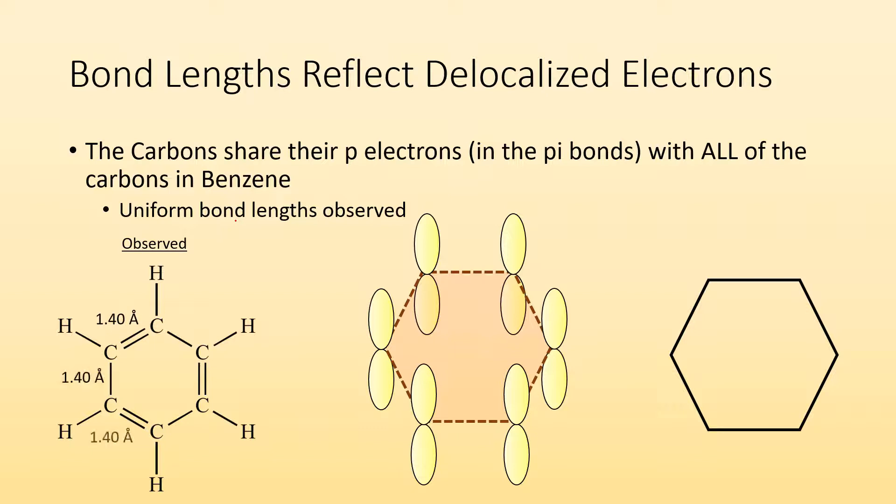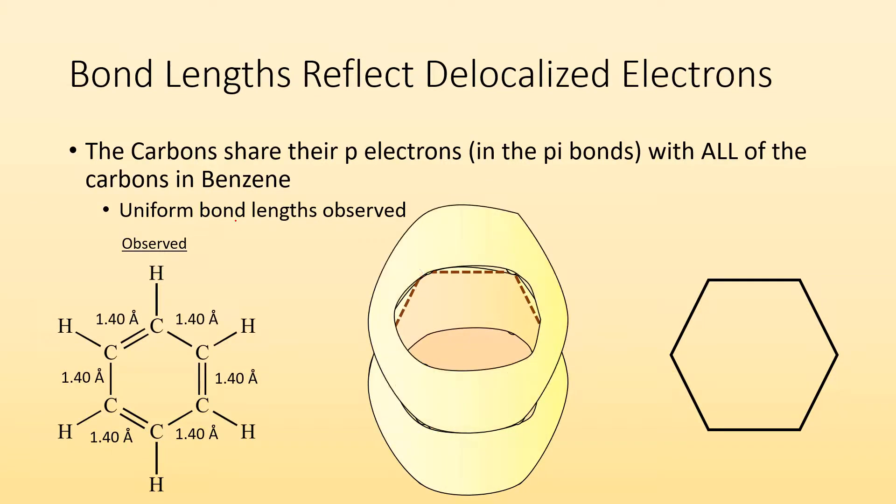That's how we end up with a uniform bond length because those electrons move across the whole molecule above and below it, which is why a lot of times shorthand for benzene, instead of showing alternating double single bonds, they can just kind of shorthand draw a circle, which it kind of looks like a nut for a nut and bolt.